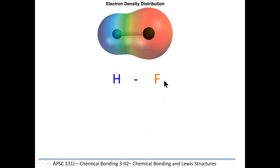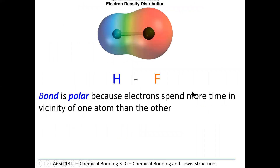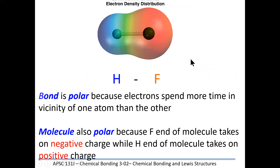For instance, in a hydrogen fluoride molecule, the electron pair being shared will spend more time around the fluorine. Fluorine has a higher electronegativity than hydrogen. We say that the bond is polar because the electrons spend more time around the more electronegative atom. And if we have a molecule that is a certain shape — in this case it's linear with two atoms — then we can say that the molecule itself is polar. We'll talk more about that in future lectures.